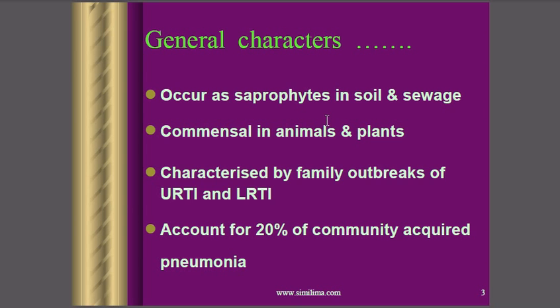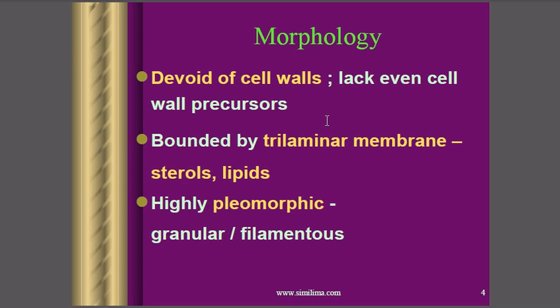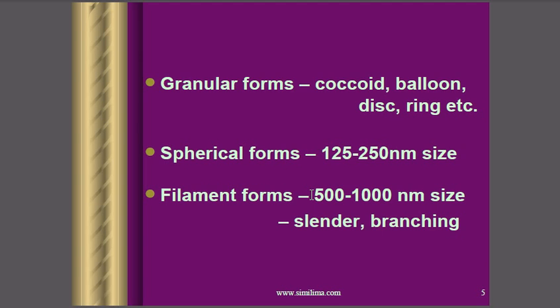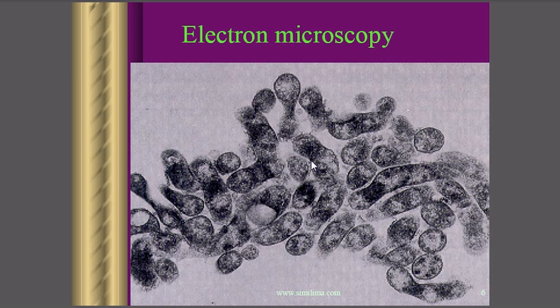Regarding morphology, since mycoplasma are devoid of cell walls, they do not have a rigid or stable unified structure. Their structure is described as amorphous and pleomorphic — they can be granular, filamentous, or spherical. As seen in pictures, you can find them in granular forms, spherical forms, and filamentous forms.